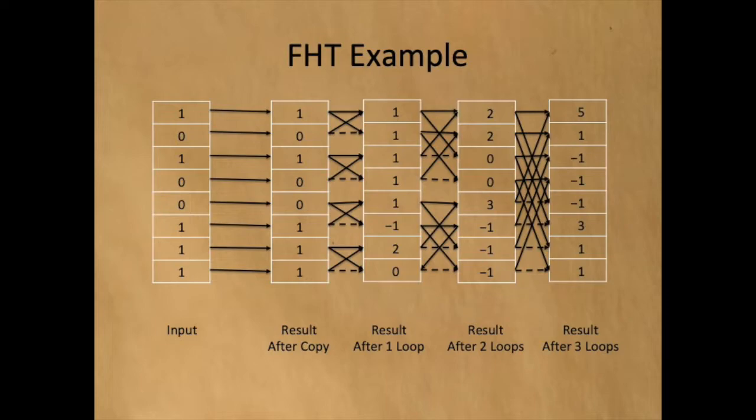Here we see a complete example for a binary vector of size 8. First, we copy the input to the result vector. Each copy computes a Hadamard transform of length 1. The first pass through the outer loop entwines length 1 Hadamard transforms into length 2 Hadamard transforms. There are four entwinings and each contains one box.